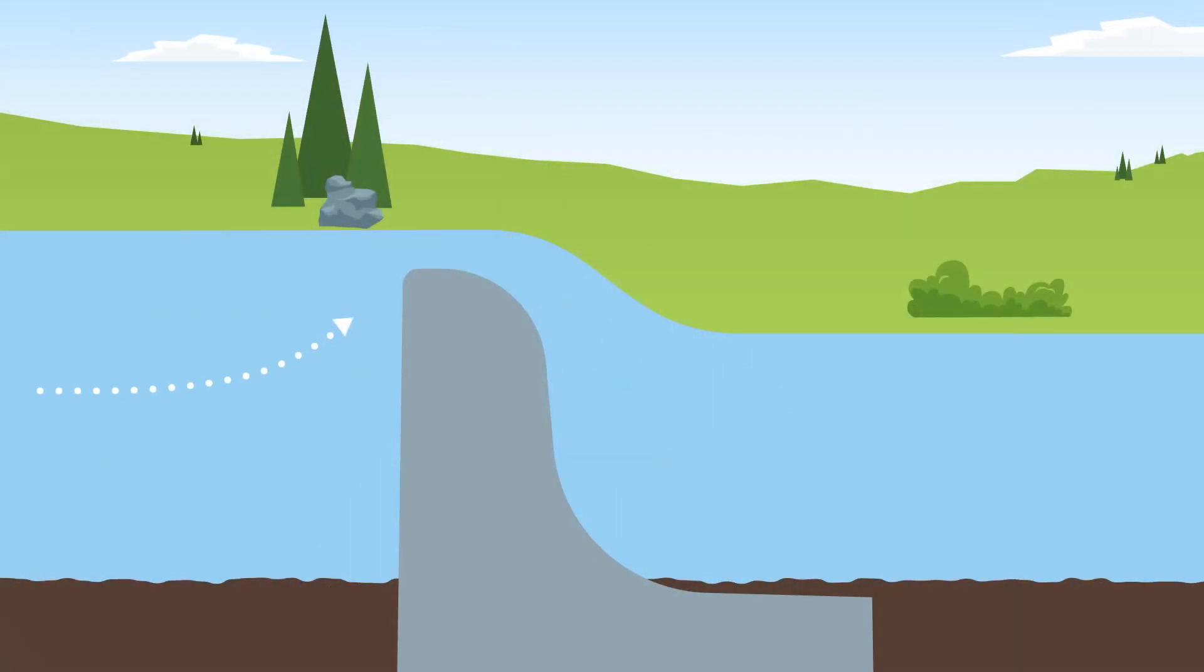As water approaches and flows over the dam, it picks up speed, rushing down to create a strong recirculating current and foaming water.